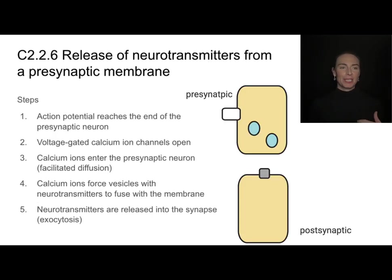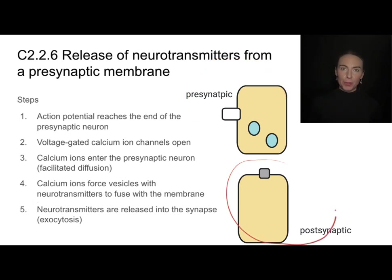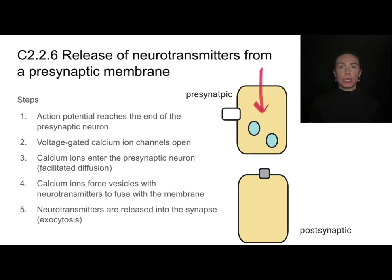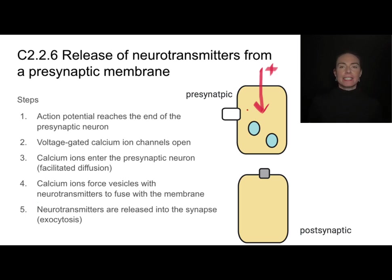Here I've drawn a synapse — the end of the pre-synaptic neuron and the beginning of the post-synaptic neuron. This action potential is going to reach the terminal end of the pre-synaptic neuron. Remember that the action potential is that wave of positive voltage, covered in a different video, and that wave of positive voltage is going to cause these calcium ion channels to open.